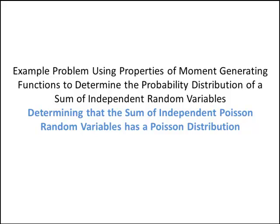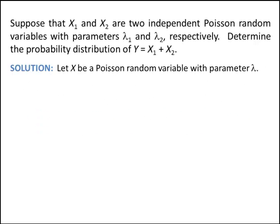In this video you'll learn how a property of moment generating functions can be used to determine the probability distribution of a sum of independent random variables. In particular, we're going to show in this example that the sum of independent Poisson random variables is in fact a Poisson random variable itself.